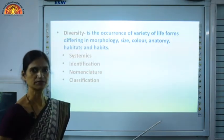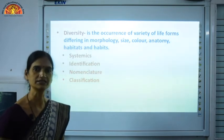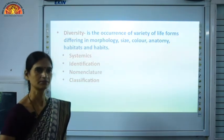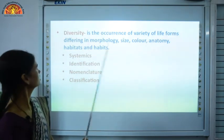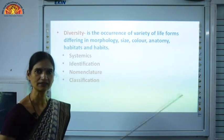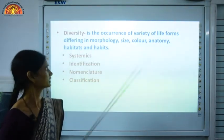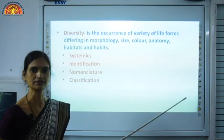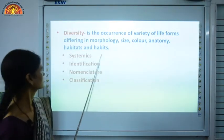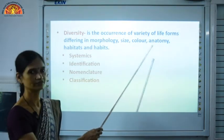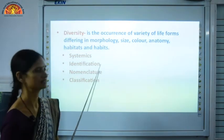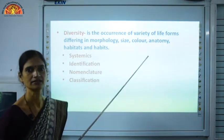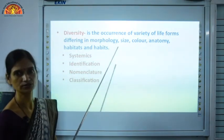The next topic is diversity. What is diversity? Diversity means the variety of plants and animals — the variety of living organisms present on the earth makes diversity. The occurrence of variety of life forms differing in morphology — externally they look completely different, some are plants, some are animals, cat, dog — externally they look different, and internally their cellular structure and internal anatomy are also completely different. They differ in morphology, size, color, anatomy, habitats, and habits.